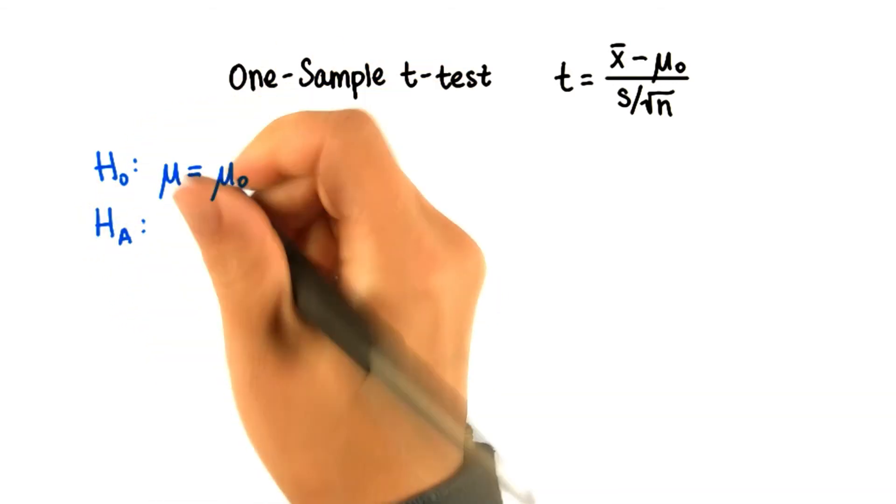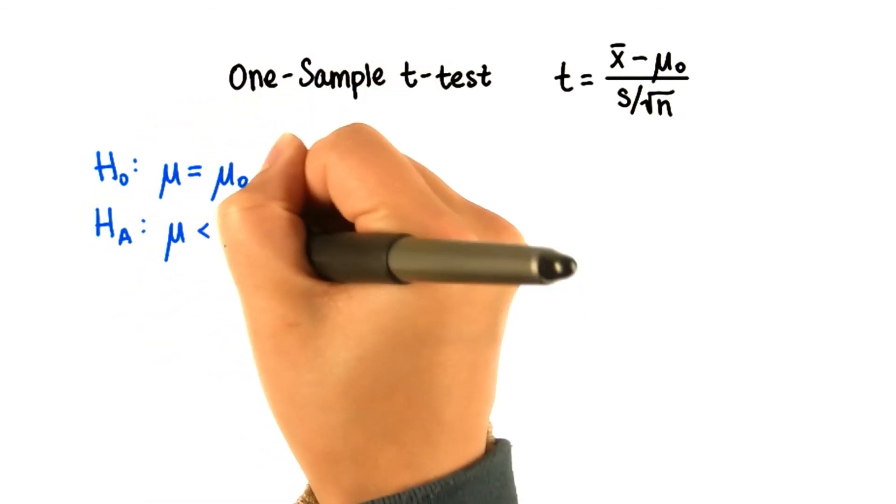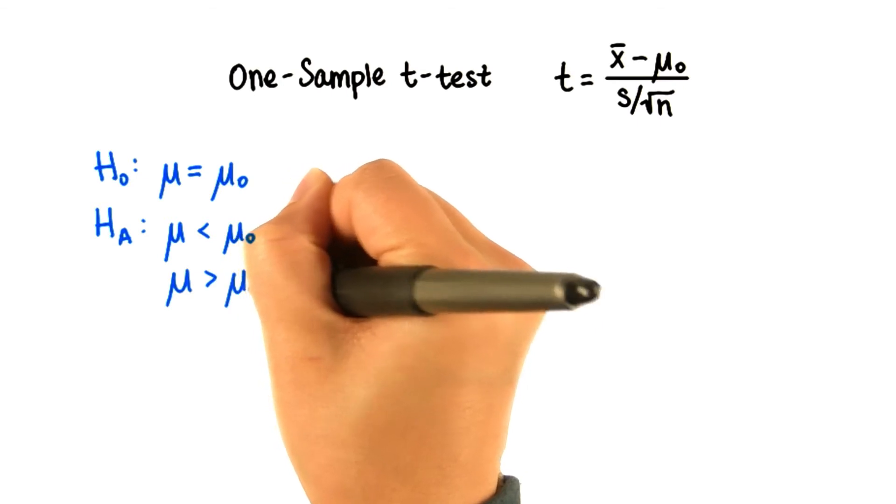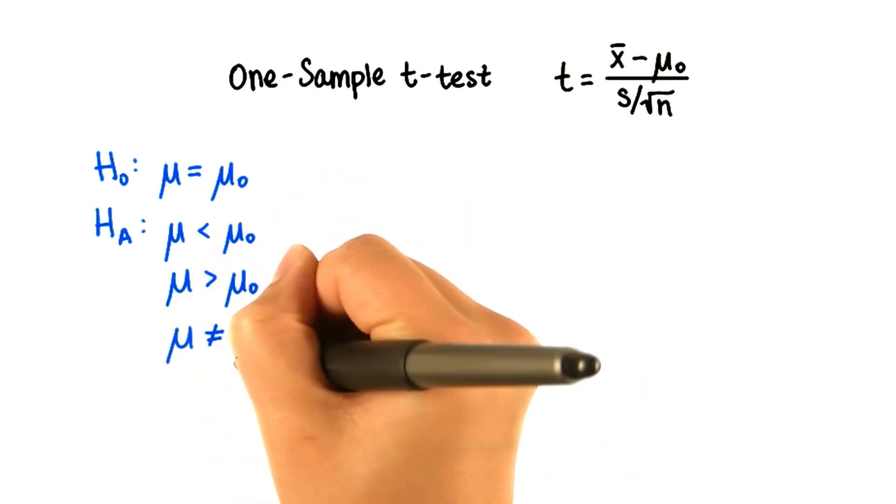And the alternative hypothesis can be either that μ is less than μ₀, greater than μ₀, or just not equal to μ₀.